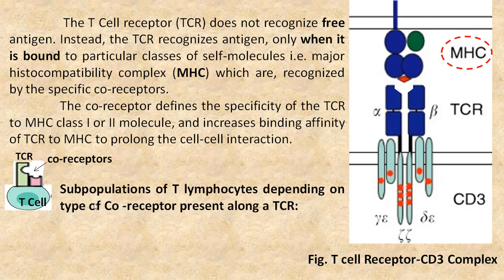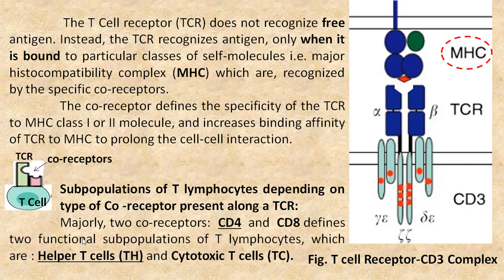Now we will see subpopulations of T lymphocytes depending on the type of coreceptor present along with the T cell receptor. Majorly two coreceptors — CD4 and CD8 — define two functional subpopulations of T lymphocytes, which are helper T cells and cytotoxic T cells.